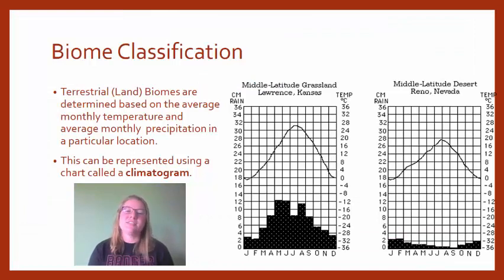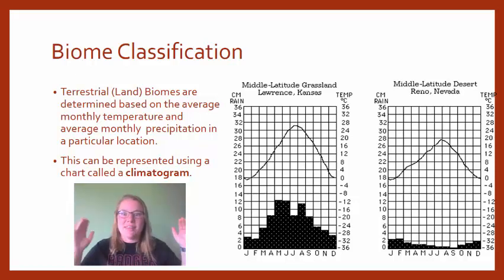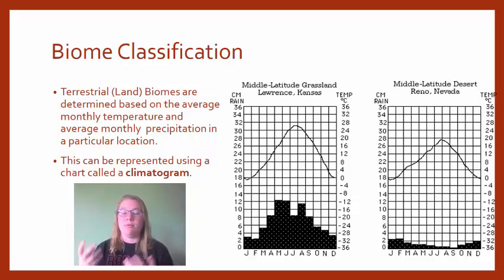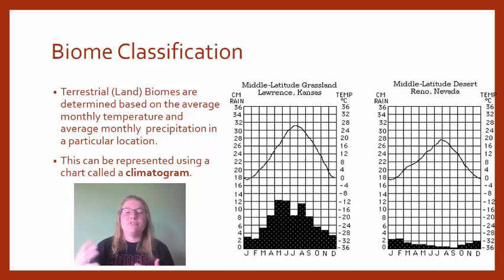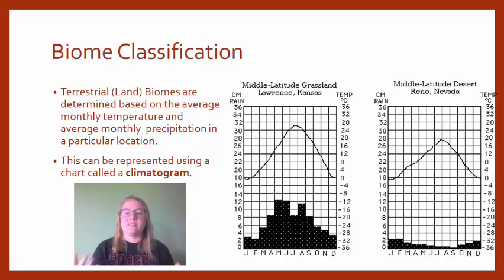Land biomes are classified using the average monthly temperature and the average monthly precipitation — that's it. That is all that goes into determining what a terrestrial or land biome is. These diagrams are called climatograms or climate diagrams. Typically we use the term climatogram. The average monthly precipitation is shown as the bar graph and the average monthly temperature is the line a bit higher up.